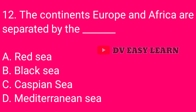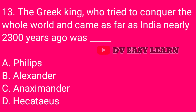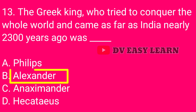The continents of Europe and Africa are separated by the dash — correct answer: Mediterranean Sea. Question number 13: Who tried to conquer the whole world and came as far as India nearly 2,300 years ago? Correct answer: Alexander.